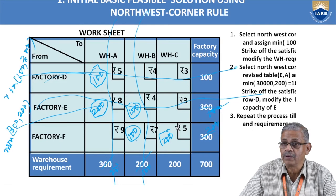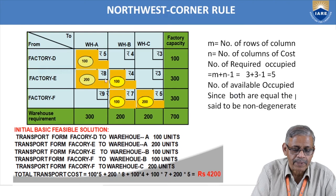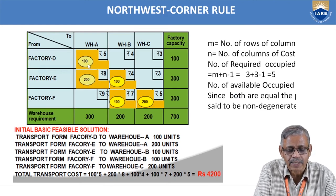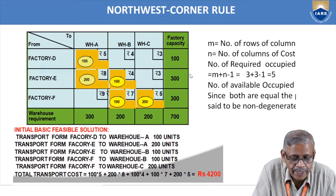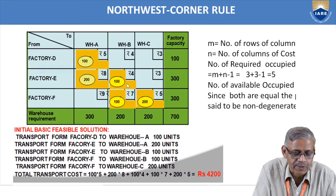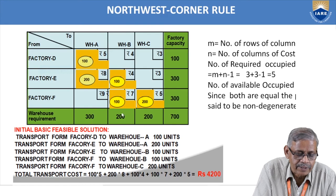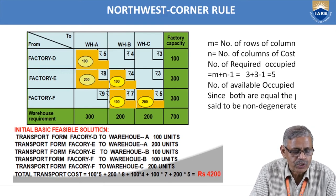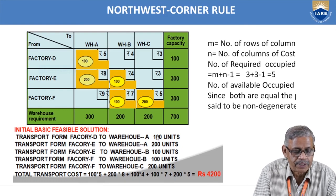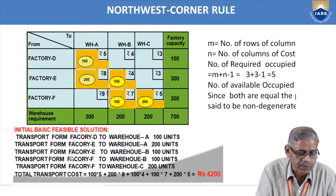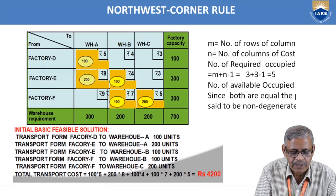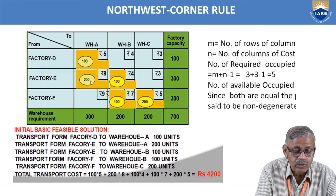The solution table shows allocations of 100, 200, 100, 100, and 200 units. Checking horizontally: row D sums to 100 ✓, row E sums to 200+100=300 ✓, row F sums to 100+200=300 ✓. Vertically: column A gets 300 ✓, column B gets 200 ✓, column C gets 200 ✓. The solution statement: transport D→A 100 units, E→A 200 units, E→B 100 units, F→B 100 units, F→C 200 units. Total cost = 100×5 + 200×8 + 100×4 + 100×7 + 200×5 = 4200 rupees.